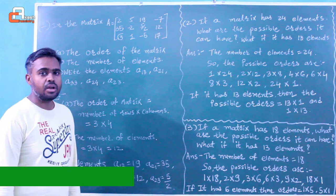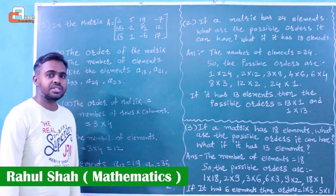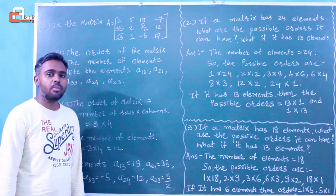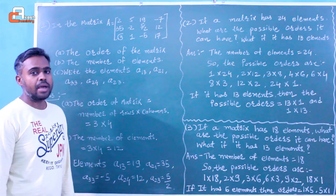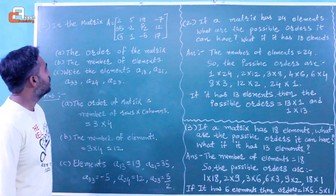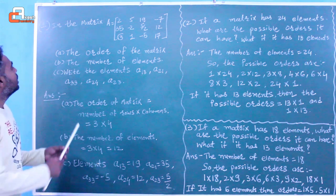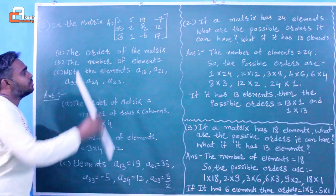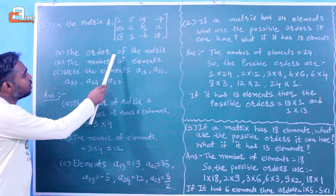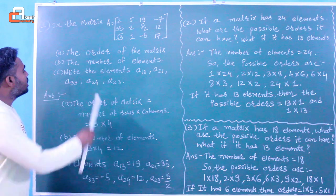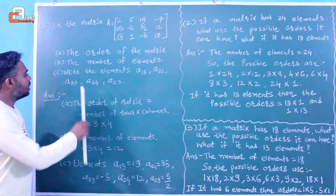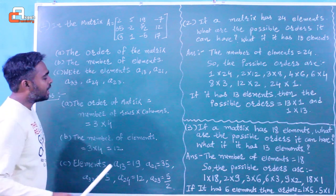Hello friends. As we discussed in our previous session, we covered the definition of matrix and types of matrix. In this example, matrix A is given and we need to find the order of the matrix, the number of elements of the matrix, and write down specific matrix elements.